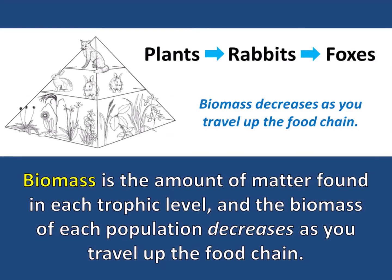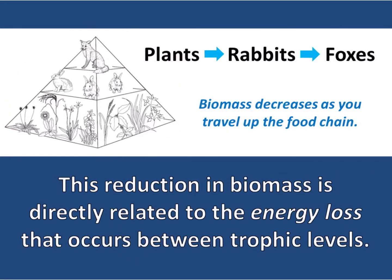Biomass is the amount of matter found in each trophic level, and the biomass of each population decreases as you travel up the food chain. The biomass pyramid depicted here shows this decrease in biomass as you travel through the trophic levels. This reduction in biomass is directly related to the energy loss that occurs between trophic levels.